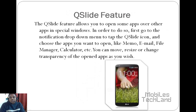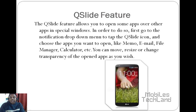Now it's time to take a look at the Qslide feature. The Qslide feature allows you to open some apps over other apps in special windows. Some means selective. So in order to access them, first go to the notification dropdown menu to tap the Qslide icon and then choose the apps you want to open.